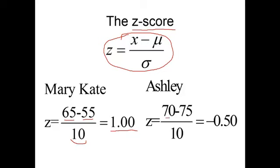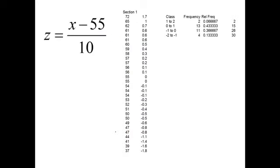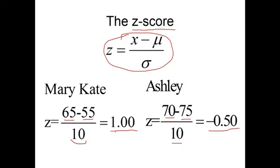For Ashley, we take her score of 70 and subtract the average from it and divide that by 10. She has a standardized score of negative 0.5. We've transferred these, translated them to standard units. There could be some way of taking these standard units and relating them to a letter grade that would be more appropriate.